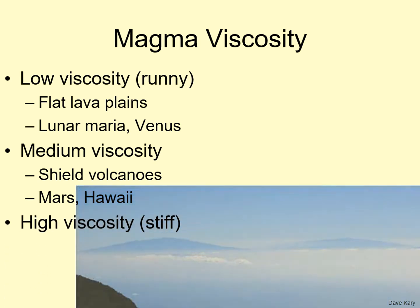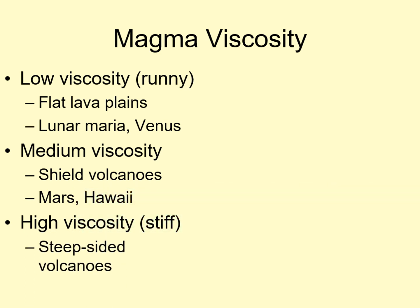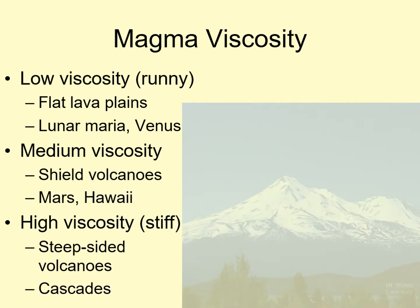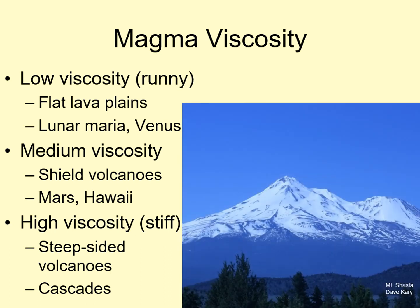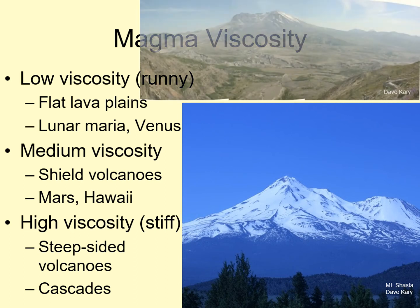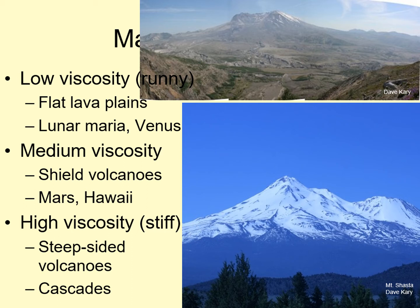Finally, the most viscous magma tends to produce more steep-sided volcanoes, like the ones in the Cascades Range in the Pacific Northwest. The high viscosity of the magma makes it hard for gas to escape, so these volcanoes often erupt explosively, the way Mount St. Helens did in 1980. In fact, many of the most destructive volcanoes on Earth have this sort of high-viscosity magma.